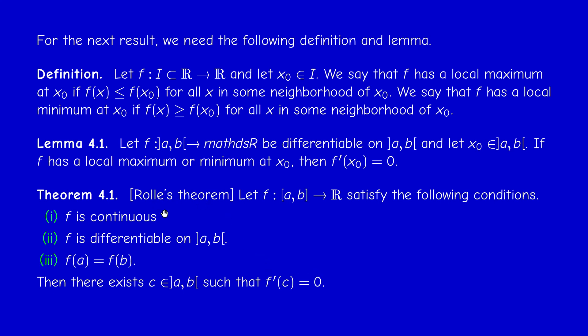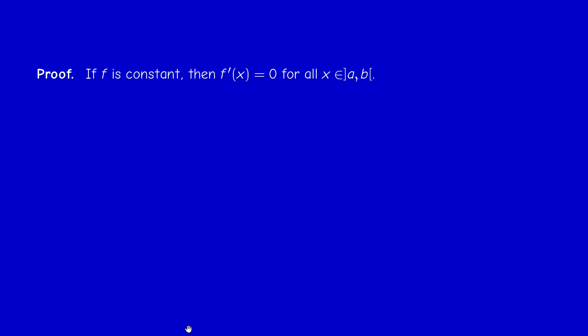The first major result of this video is known as Rolle's Theorem. If you have a function defined on a compact interval [A,B], which is continuous on [A,B], differentiable on the open interval (A,B), and having the same values at the endpoints — so F(A) = F(B) — then F prime must vanish inside the interval at some point.